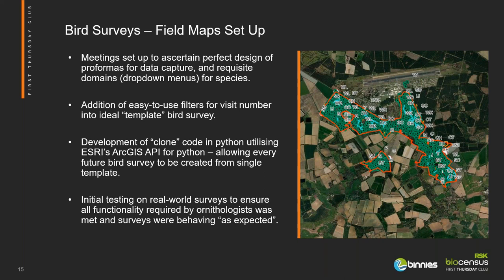For the Field Maps setup, before we could create an automated flow we needed to design the perfect template from which all surveys could be created. This included making surveyors' lives easier with dropdown menus for species and activities, and simple filters so they could switch between previously recorded data. We had lots of meetings with the ornithologists, agreed on a template, and started code development. There's not an easy way in Field Maps to clone surveys out of the box, so we used Python — an open source programming language — to automate the setup of future surveys based on that template. That image shows just an example of how many bird points can be captured on a site over multiple visits — all those green dots represent individual bird sightings.